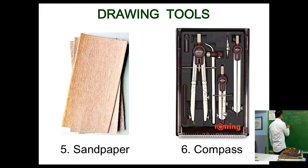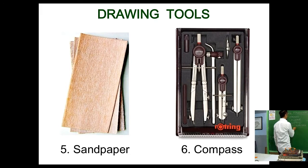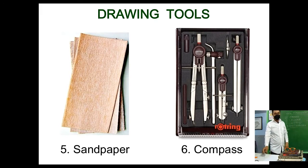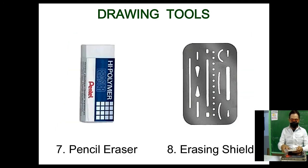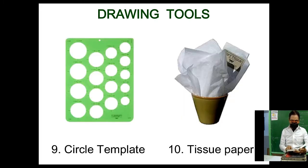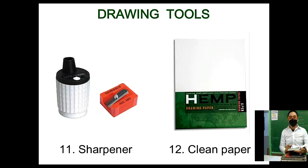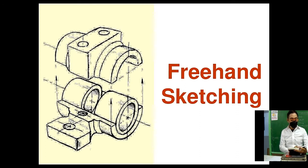Other drawing tools include sandpaper, which you will use for sharpening your pencil; an architectural or engineering compass, which is more expensive than an ordinary compass; a pencil eraser; an erasing shield; a circle template; and tissue paper to wipe dirt off your table and hands. You will also need a sharpener and clean paper for studies and sketches.